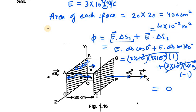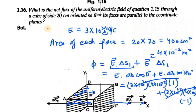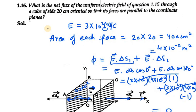Therefore, the net flux is zero. It is established here that if some electric flux enters the cube, the same amount of flux leaves through the other face, so the net flux is zero in this case. Thank you for watching question number 1.16.